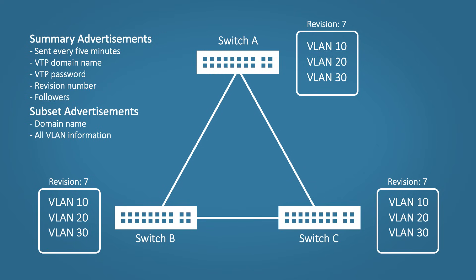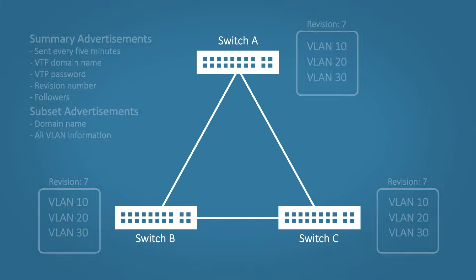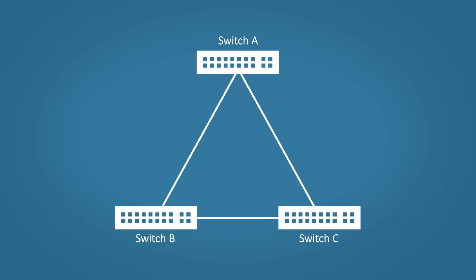There is also a third message type: the advertisement request. This is used when a switch is reset, the VTP domain name has changed, or the switch receives a summary advertisement with a higher revision number than its own. These messages allow the switch to request a subset advertisement so it can synchronize its VLAN database.